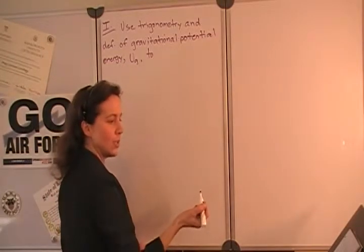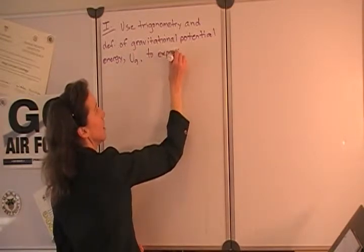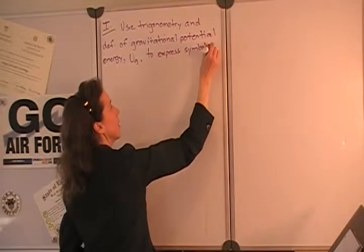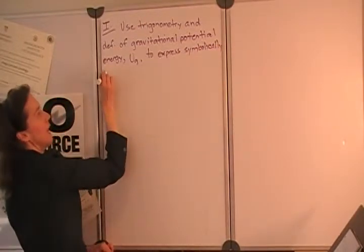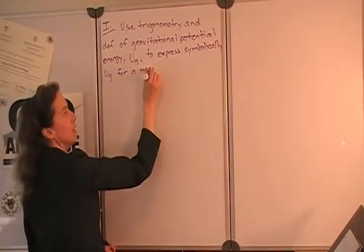And what we want to do is find a symbolic expression for that gravitational potential energy for a mass on an incline.